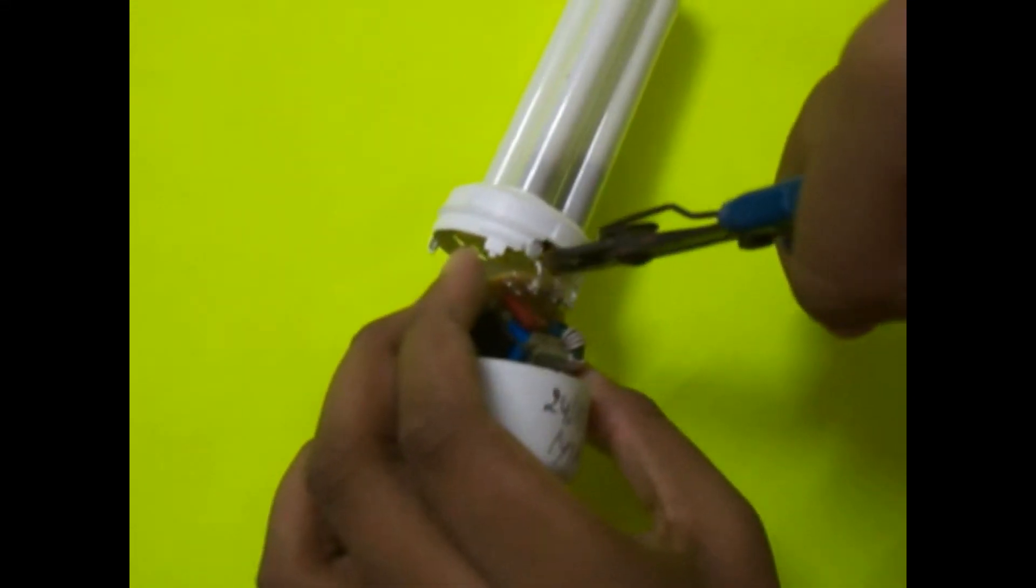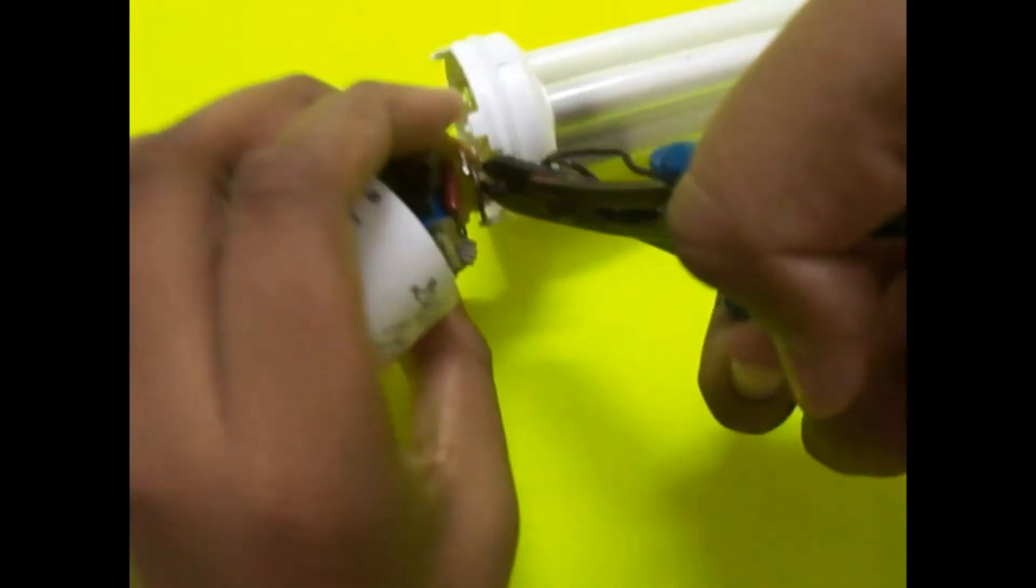Now just cut the four wires going to the CFL and also cut the two wires, namely live and neutral, from the socket.